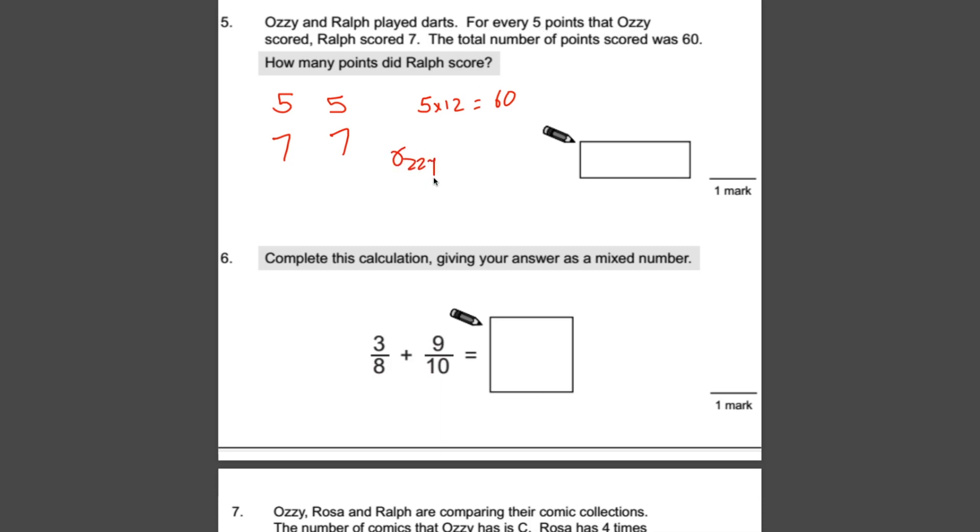So Ozzie has got 25 points, and Ralph will have seven times five. So Ralph will have 35 points. And if you just check, do they make 60? Yep, they do. So how many points did Ralph score? You know that Ralph scores seven per round, if you like, and they've played five rounds. So Ralph has scored seven times five, which is 35 points.